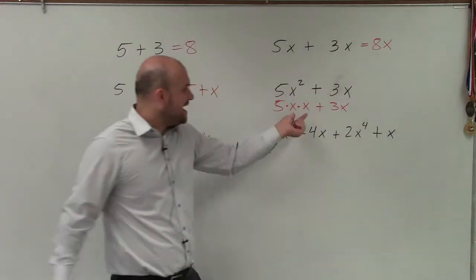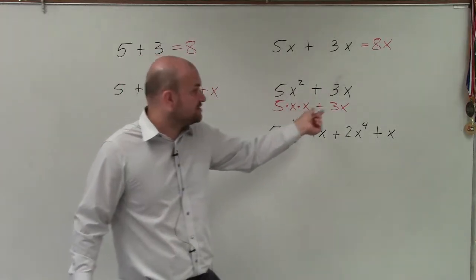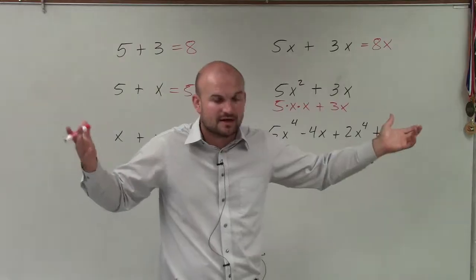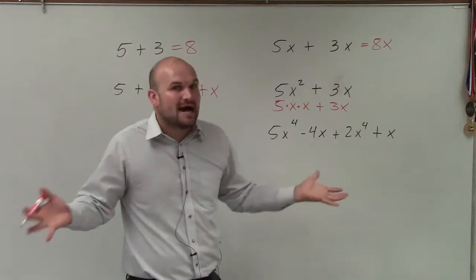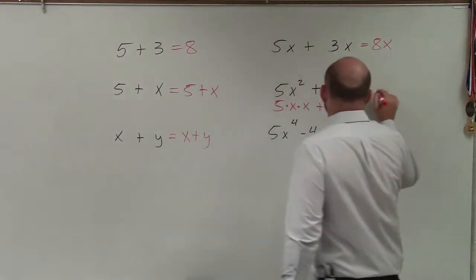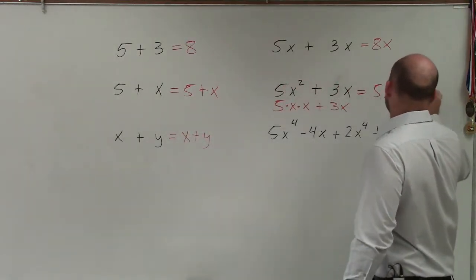So therefore, the factors of x squared are x times x, where just the factors of x are just x, right? And 1. Obviously, always 1's there. So therefore, they don't have the same variable factors. So I cannot combine them. They're not like terms. So we just rewrite this as 5x squared plus 3x.